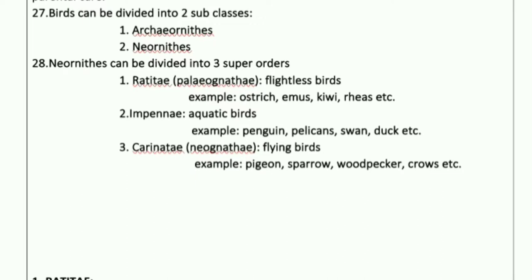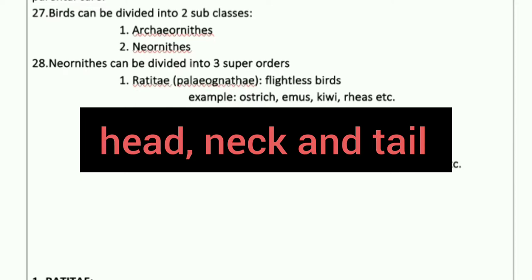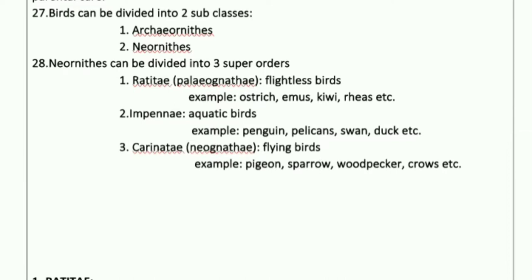In the previous video we discussed the general characteristics of Aves. Let us do a quick recall so that you will connect with the actual topic. The Aves are warm-blooded animals, meaning they are homeotherms, and the body is divided into head, neck, and short tail. Coming to the digestive system, they have a complete digestive system.